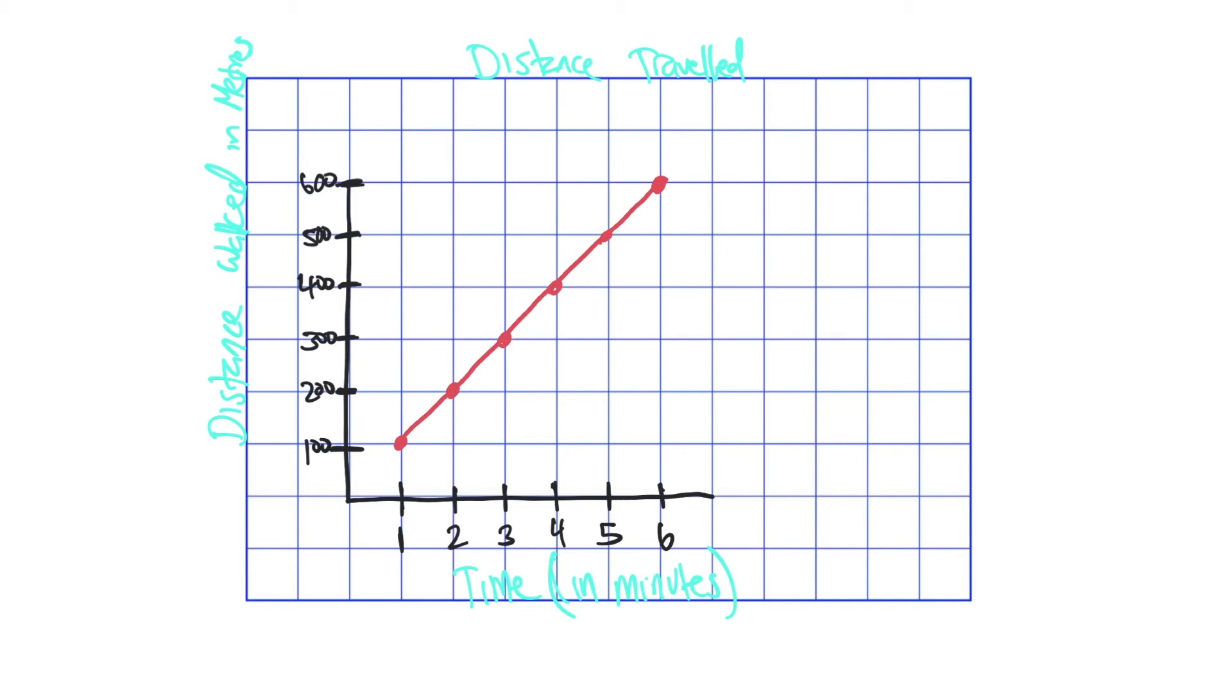So we can see that in one minute you walk 100 meters, in two minutes you walk 200 meters, three minutes is 300 meters and so on. So we're skip counting by 100. So I want to know exactly how far I've walked in this amount of time.